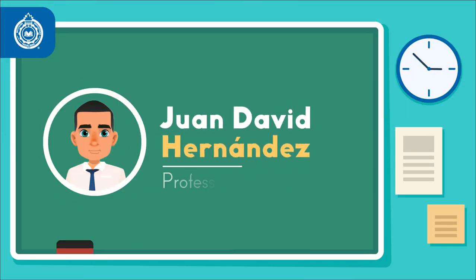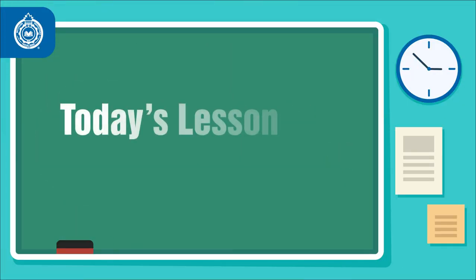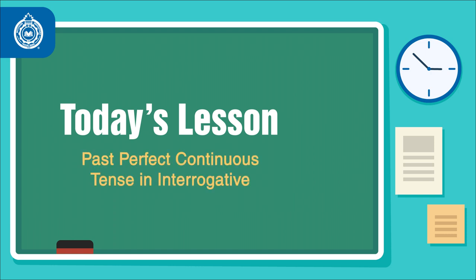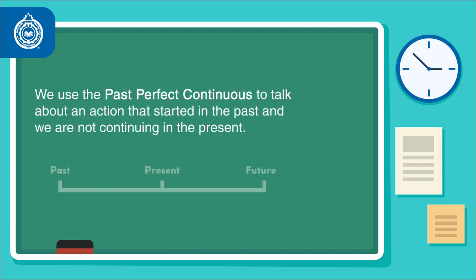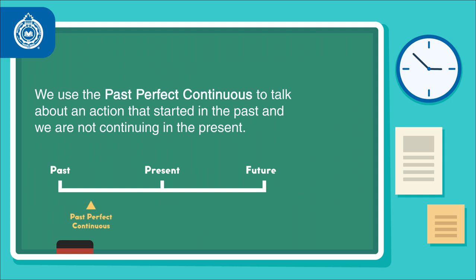Hello, this is Activate Your Grammar. Today we're going to look at the past perfect continuous tense in interrogative sentences. We use the past perfect continuous to talk about an action that started in the past and was not continuing in the present.